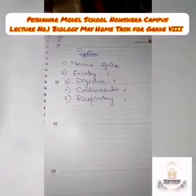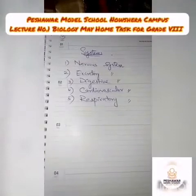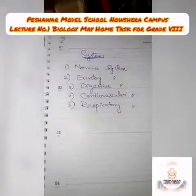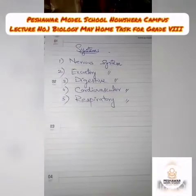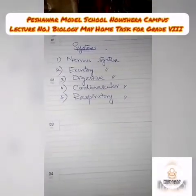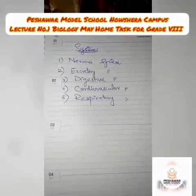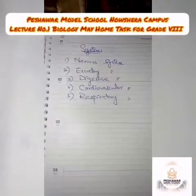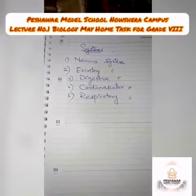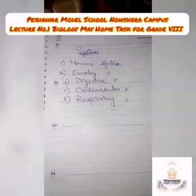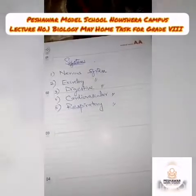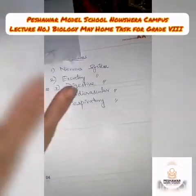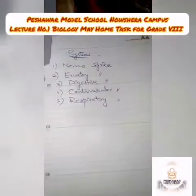Now, what are the systems present in the human body? When organs and tissues combine together, they form a system. These include: nervous system, excretory system, digestive system, cardiovascular system, and respiratory system. Apart from these, there are many other systems as well which you have to find out.